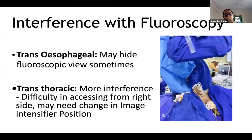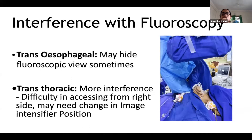With trans esophageal echo, there is very little interference with fluoroscopy, though sometimes the probe may hide the view — for example, in ASD device closure the probe may lie in the midline and obscure the device. With trans thoracic echo, there is much more interference with fluoroscopy; it is always difficult to access from the right side, which is usually the convenient position, and the image intensifier position may need to be changed frequently.